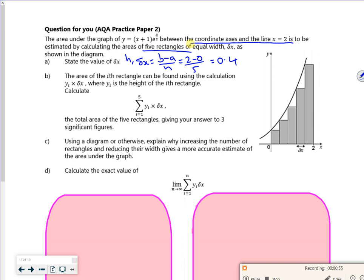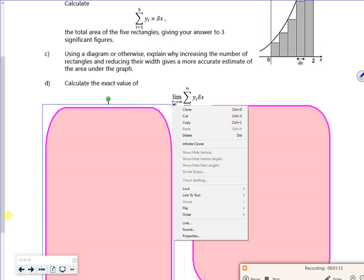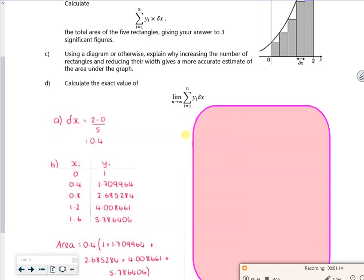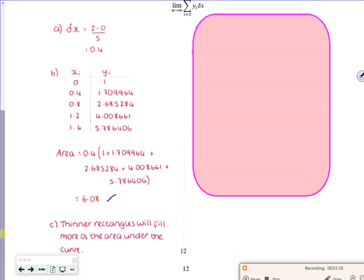So the area of the ith rectangle can be found by height times width. So to find the total area, we've got the equation. So we need the y values, which you can get from your calculator and the table function. So they've been done there. Then I've got the area, so it gives me an area of 6.0. So hopefully you're okay. This is a question for you.